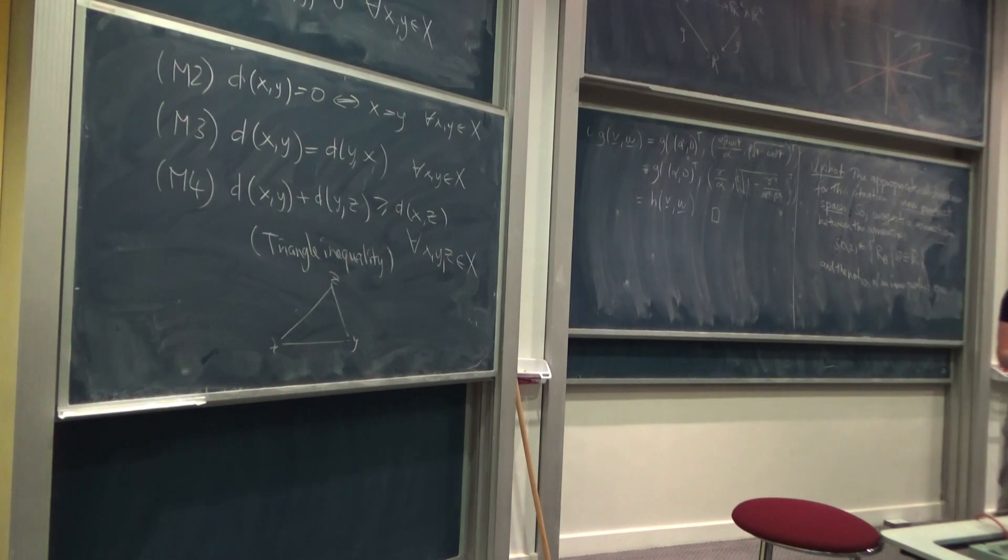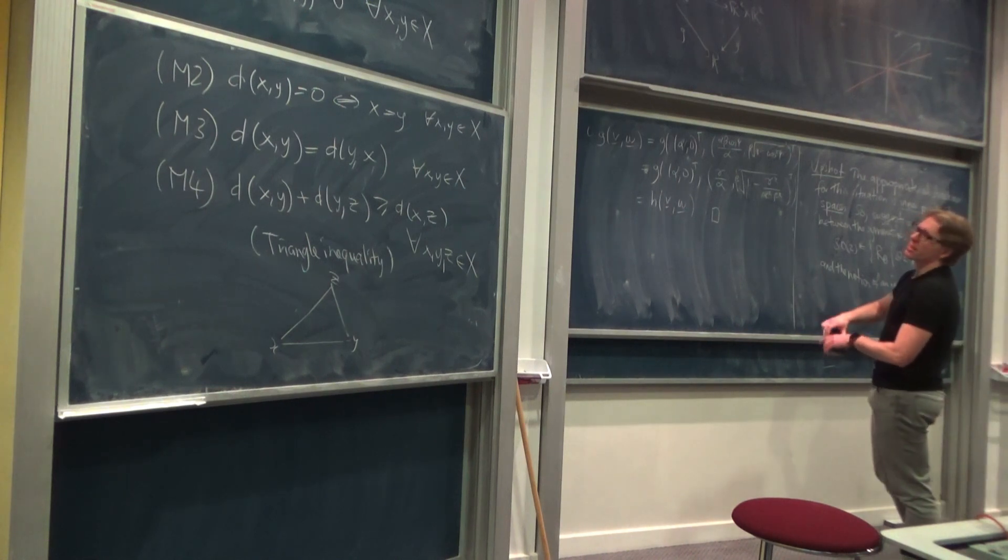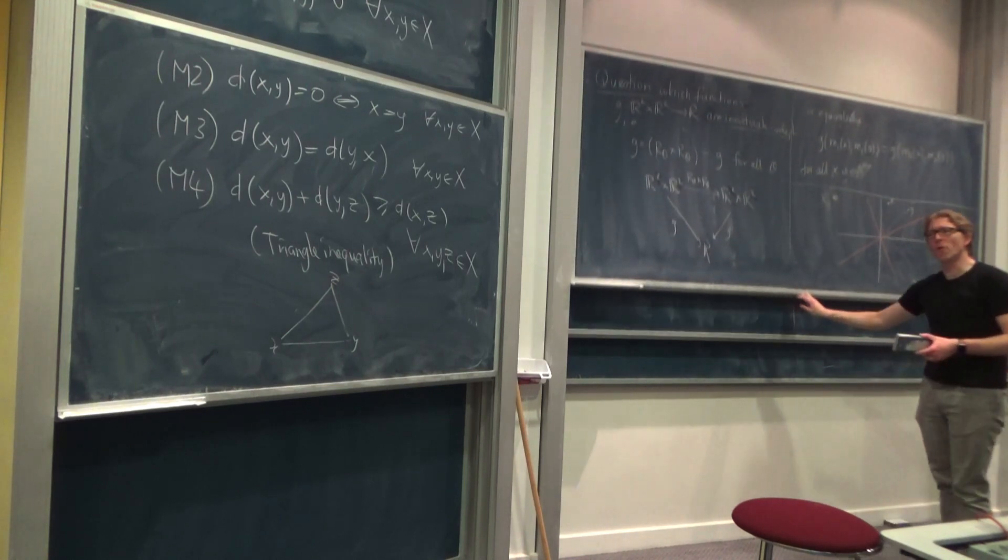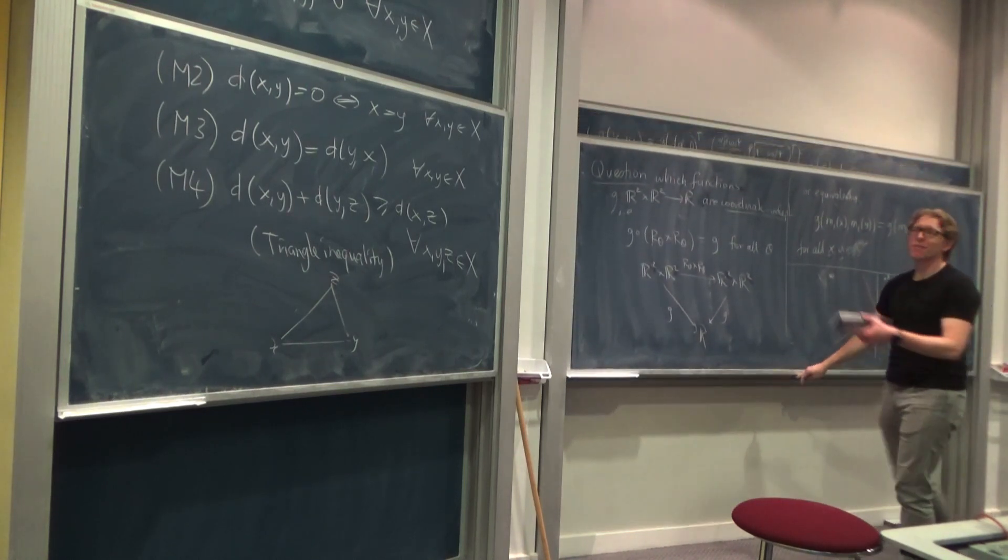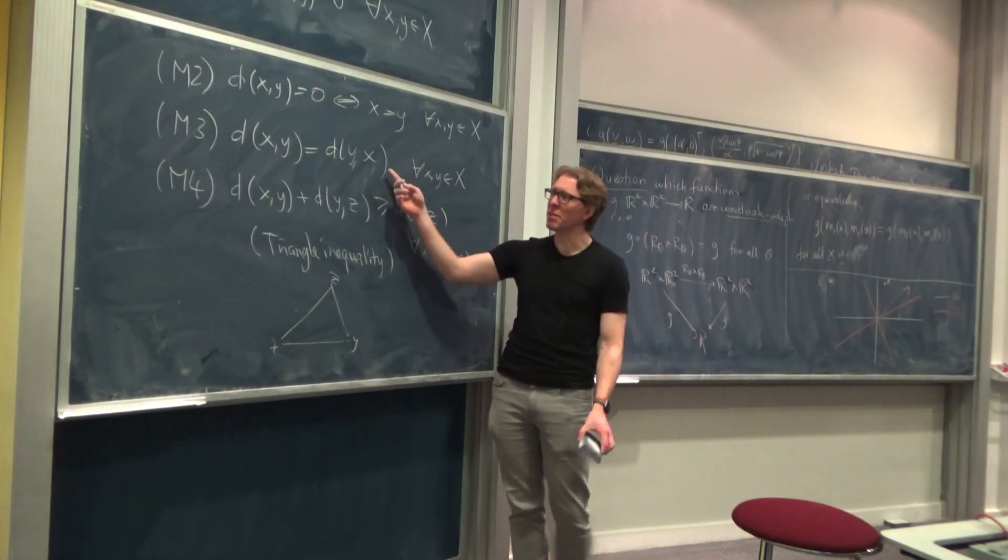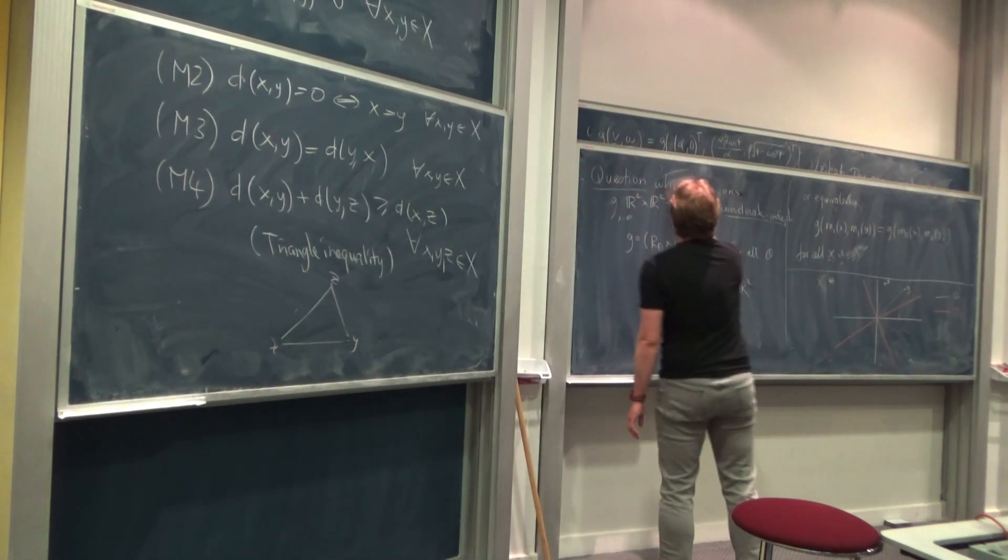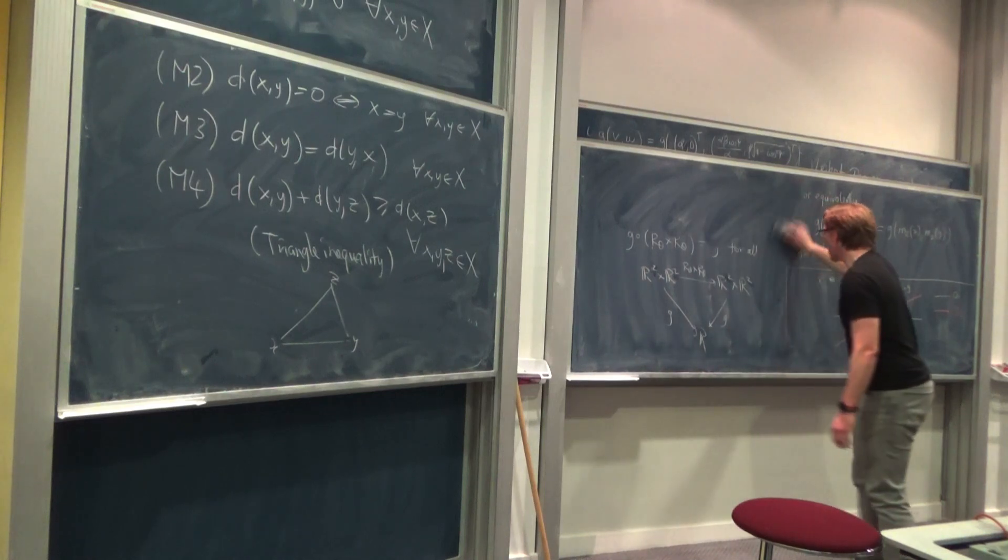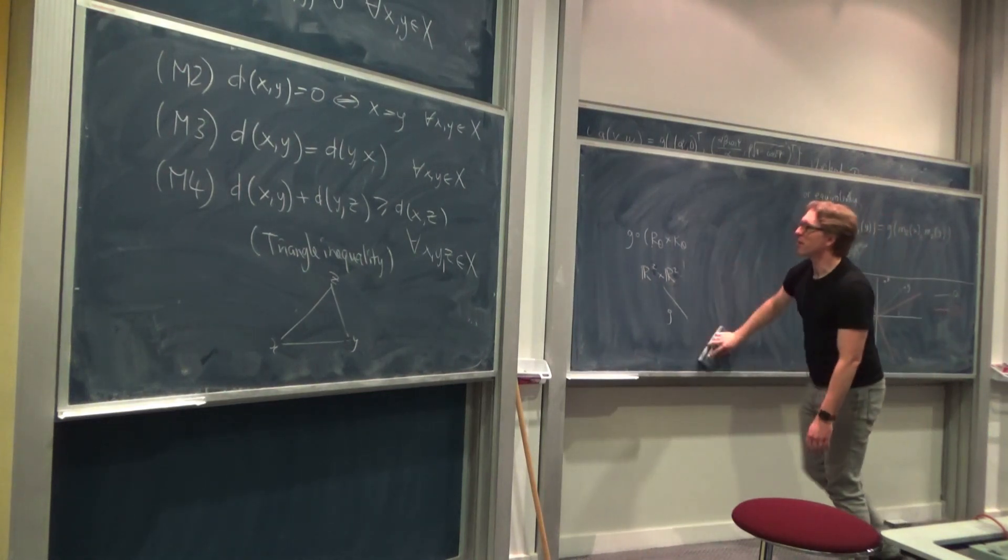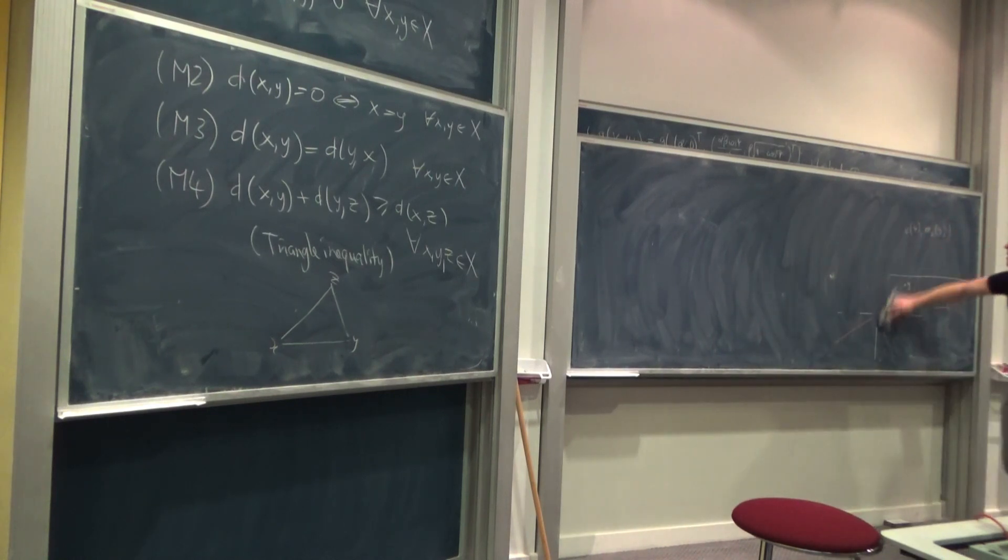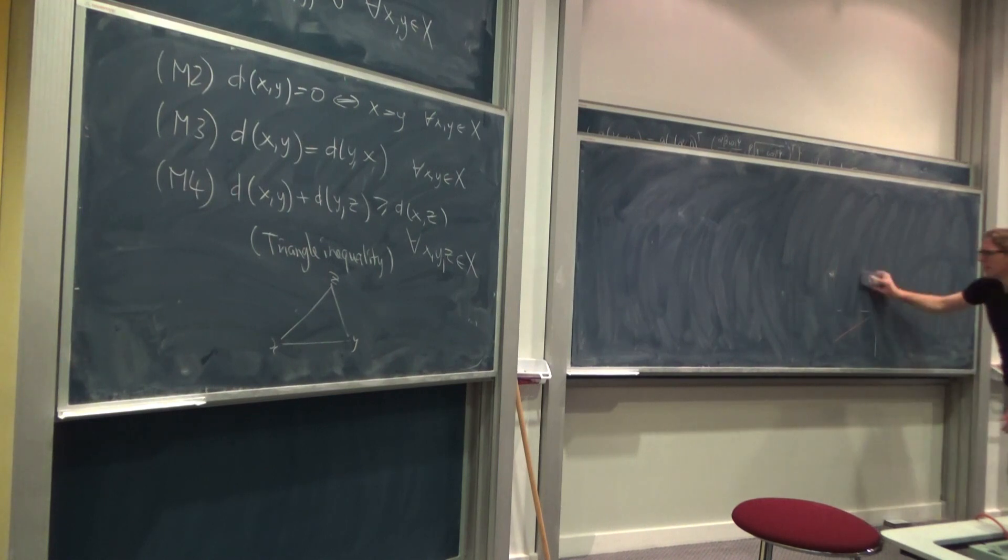I mean, the distance function in Euclidean space maybe satisfies more. Why are these the most important things? And we'll discuss that by looking at various natural examples where, for example, M1 through M3 is true, but M4 is not, or even there are reasonable notions of distance, for example, between probability distributions, which are not symmetric but still very useful. So it's not the case that these are the only notions of distance that necessarily come up or are useful, but with these axioms we can prove important theorems like the Banach fixed-point theorem, which is coming up.